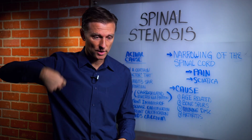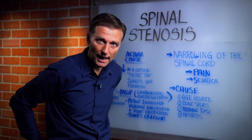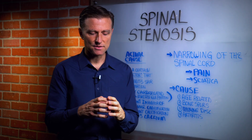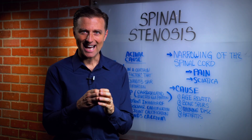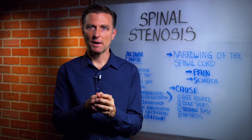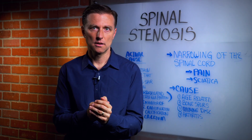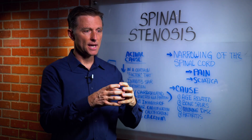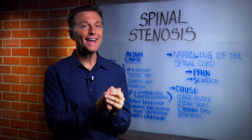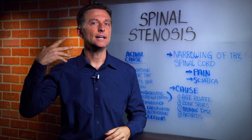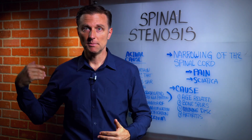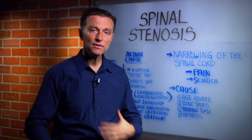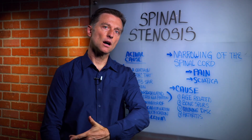You have the spine that goes from your head all the way down to your lower back. With this condition, there's just not enough space in that column, so it presses on the spinal cord. It's narrowing of this space, pressing on the cord, causing pain. It could be in the neck, the low back, the mid-back, or sciatica — down the legs or even pain down the arms.